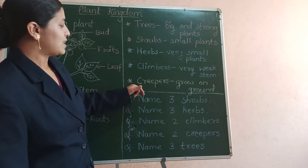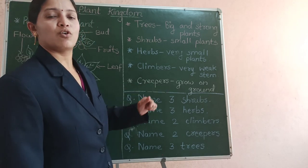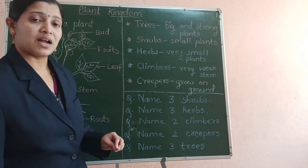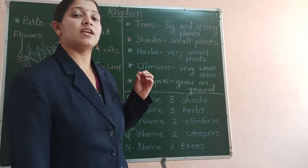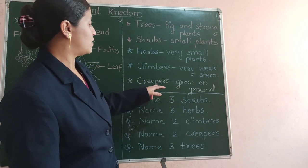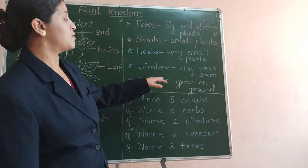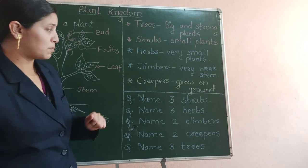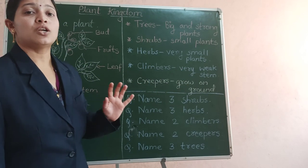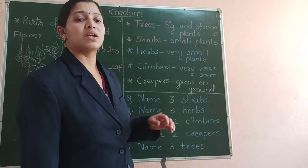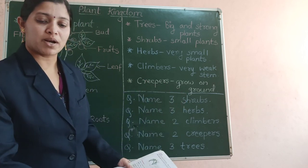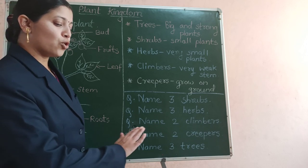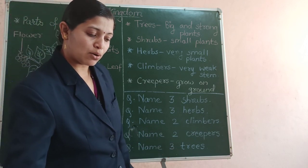Next are the creepers. Creepers are plants with very very weak stems, even weaker than the climbers. They don't take support to grow but just spread on the land and grow on the ground itself.